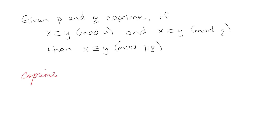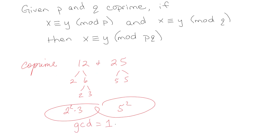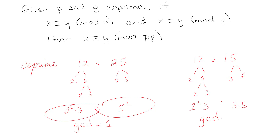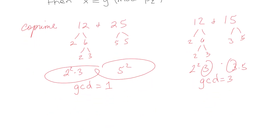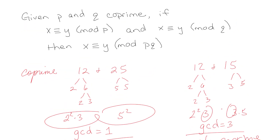First of all, let's make sure you know what co-prime means. Co-prime means having no common factors. Like 12 and 25 — the prime factorization of 12 is 2 squared times 3, and 25 is 5 squared, so they have no common factors; their greatest common divisor is 1. Whereas 12 and 15 — 12 is 2 squared times 3, and 15 is 3 times 5 — they have a GCD of 3. GCD of 1 means co-prime; GCD that's not 1 means not co-prime.